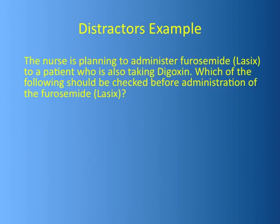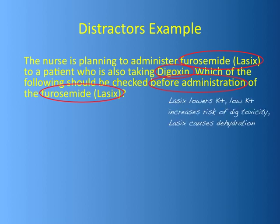Here's an example: 'The nurse is planning to administer furosemide (Lasix) to a patient who is also taking digoxin. Which of the following should be checked before administration of the furosemide?' Circle the keywords — Lasix and digoxin — and 'before administration of the Lasix.' Then handwrite what you know: Lasix lowers potassium, potassium has something to do with digoxin, it increases the risk of dig toxicity, and Lasix causes dehydration.